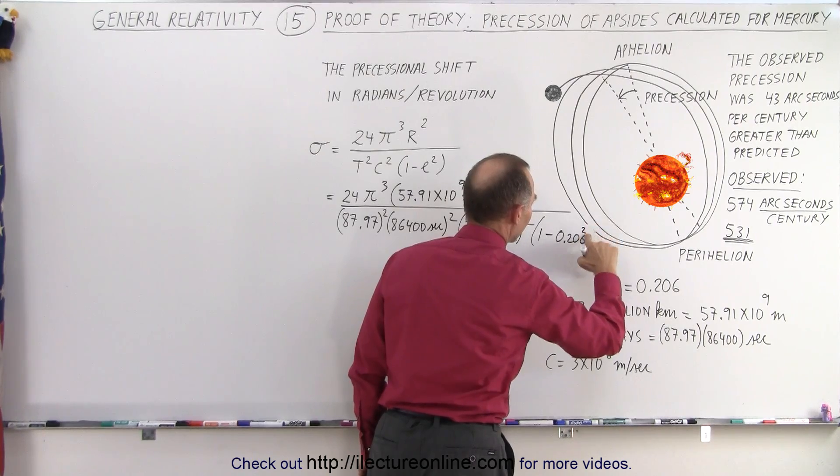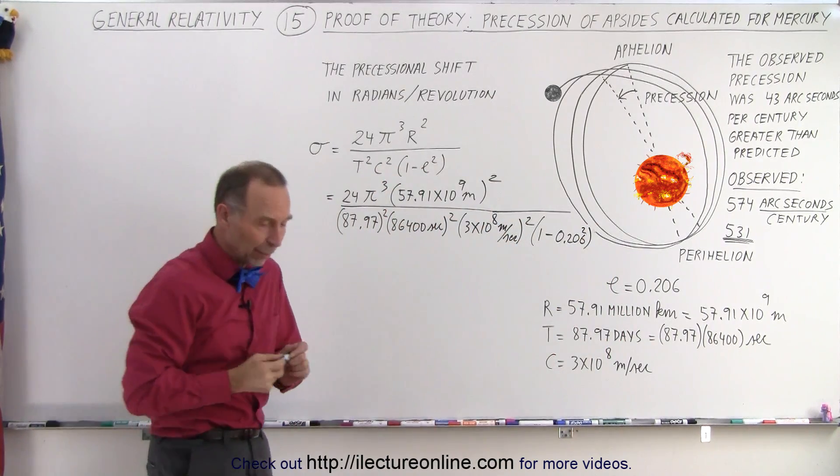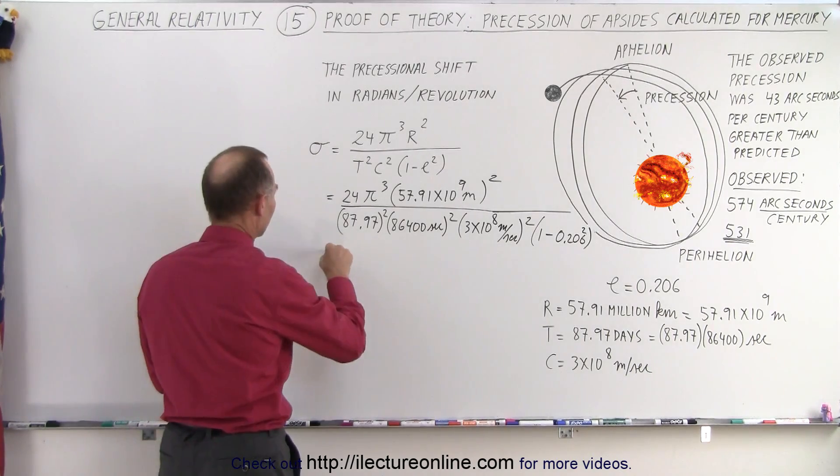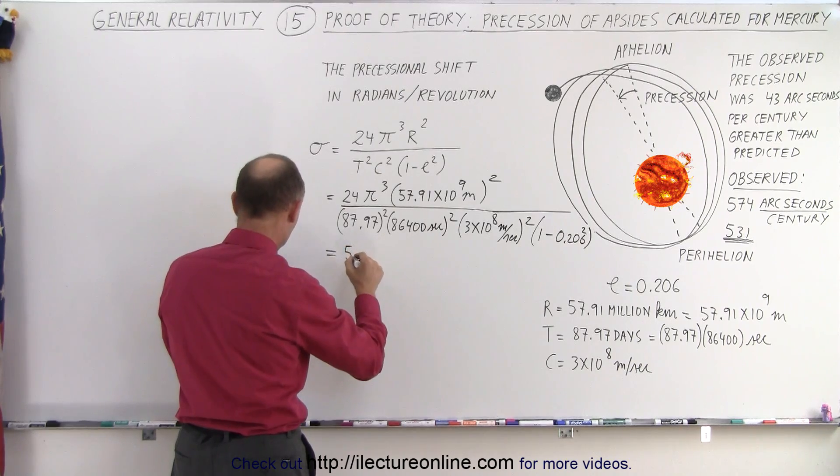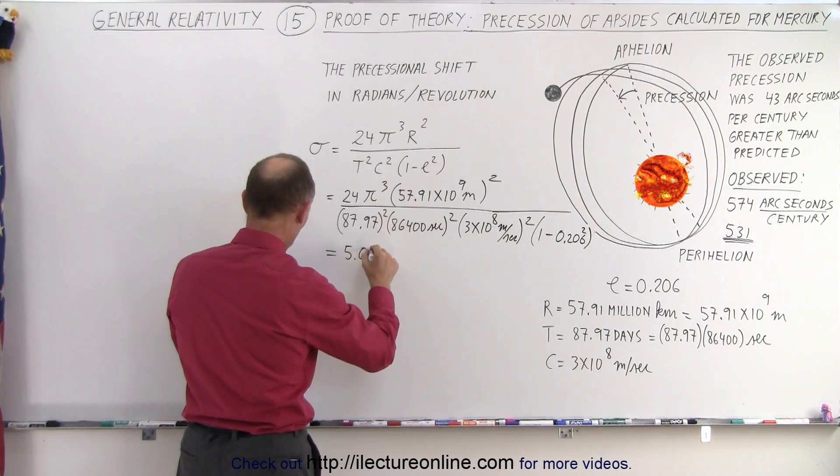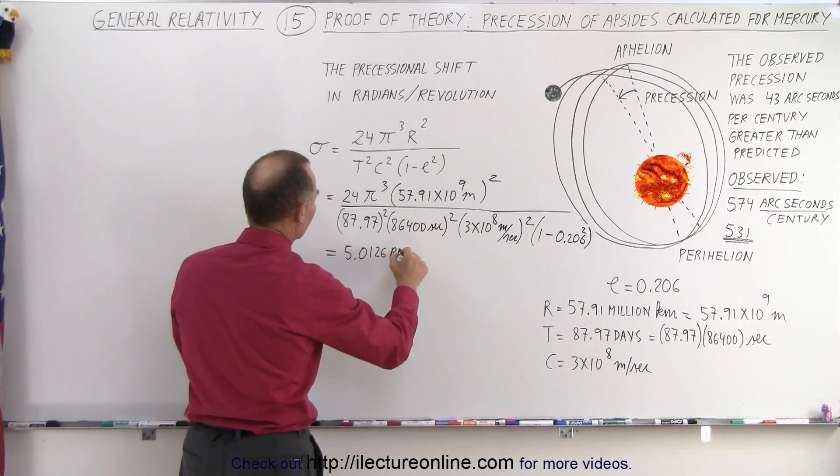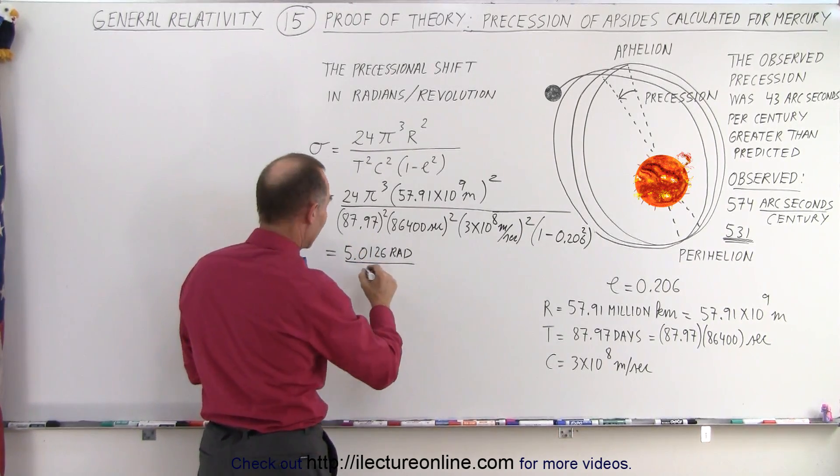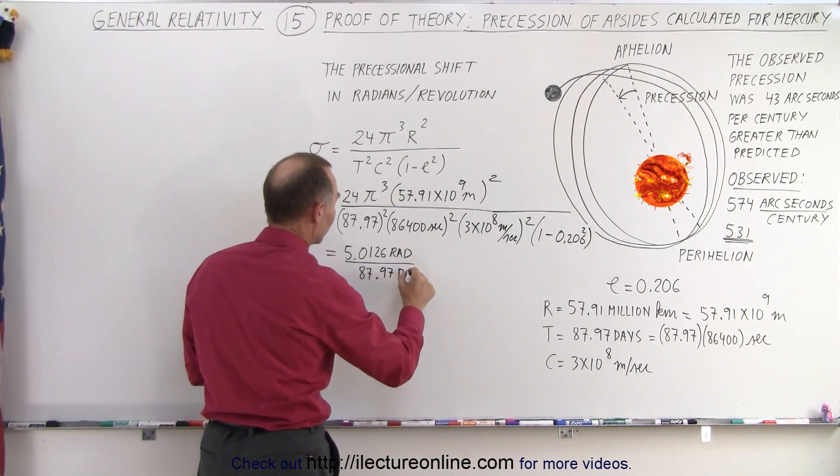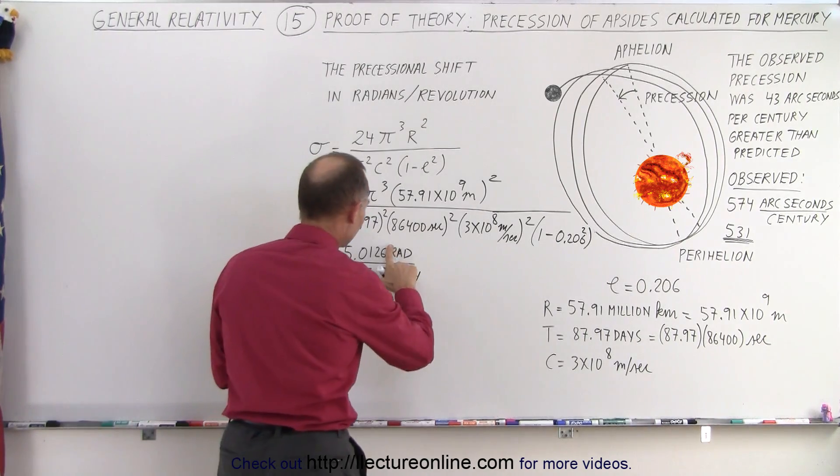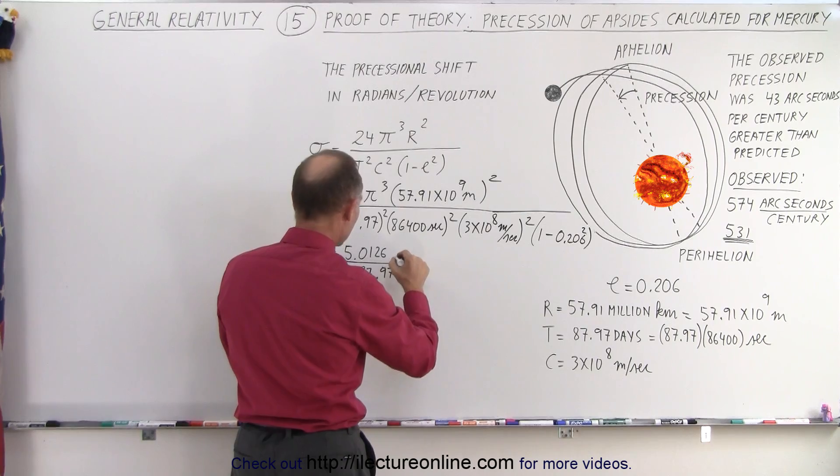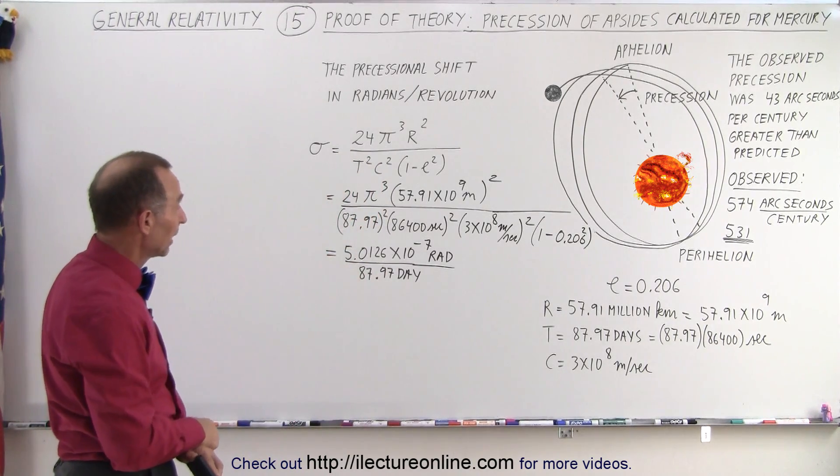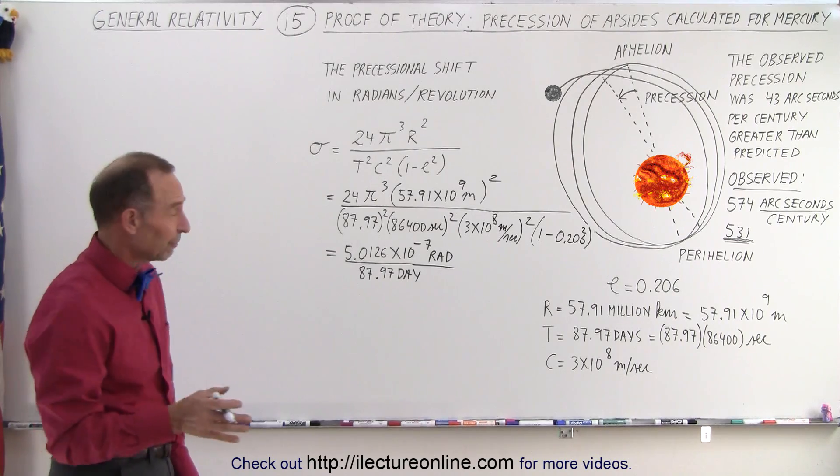Okay, let's find out what we get. So we need a calculator starting with 0.206 squared. This is going to be in radians per revolution, that would be 5.0126 × 10⁻⁷ radians per revolution, per one revolution. So that would be in number of days, that would be 87.97 days. So that many radians, that's a tiny, tiny number. It's in radians, but now we need to convert that to arcseconds.